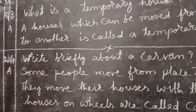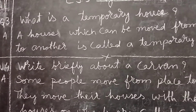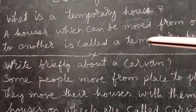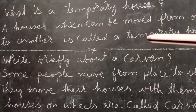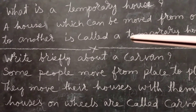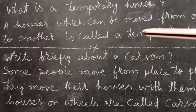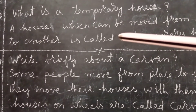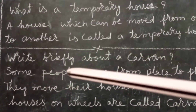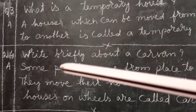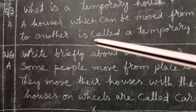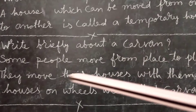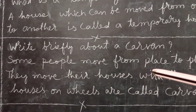I will give a few more minutes to look at the board and write the question answers. Children, copy. For the third question answer you can draw a hut or any type of house. You can draw huts — huts can be moved from place to place, from one place to another, as I explained. All temporary houses can be moved from one place to another.